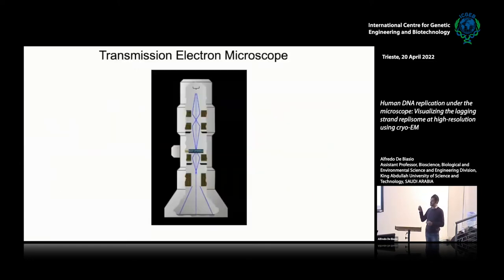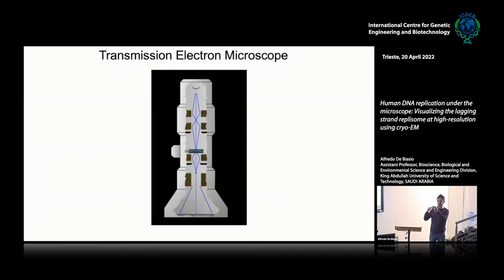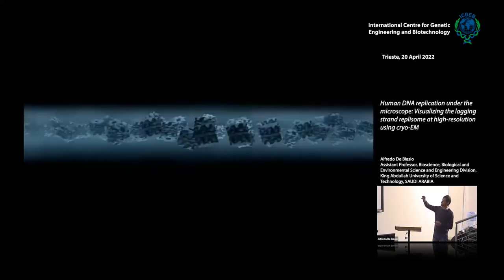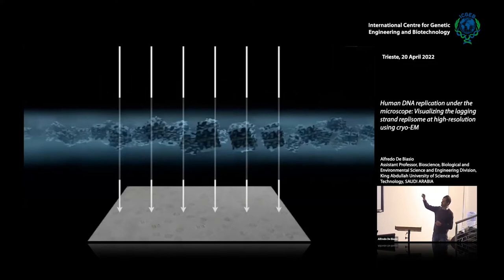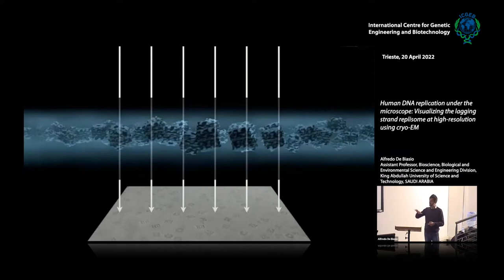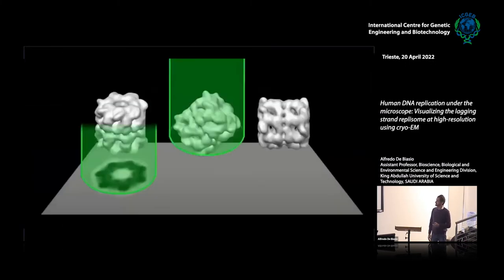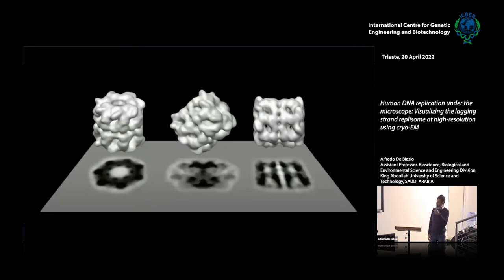We place the frozen protein sample into a transmission electron microscope, where it is subjected to a beam of high-energy electrons. The electrons hit the sample and are diffracted, then refocused by electromagnetic lenses to produce a magnified image up to tens of thousands of times. The protein in the cryo-grid is frozen in random orientations, so when subjected to the electron beam, what we see is a set of 2D projections of the same protein in different orientations.